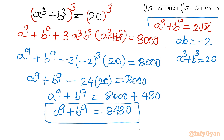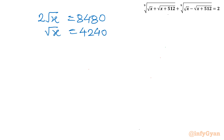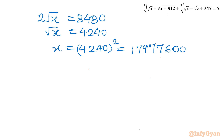Now comparing with our equation 2√x equals 8480, divide both sides by 2 to get √x equals 4240. Squaring both sides: x equals 4240², which calculates to 17,977,600 — or approximately 17.9776 million.